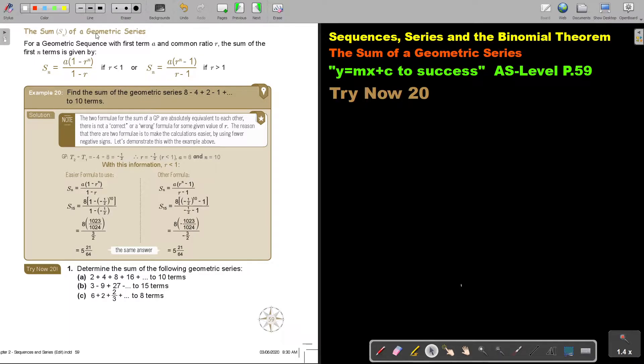The sum of a geometric series. For a geometric series with first term A and common ratio R, the sum of the first N terms is given by this formula where it's A times 1 minus R to the power N, divided by 1 minus R.